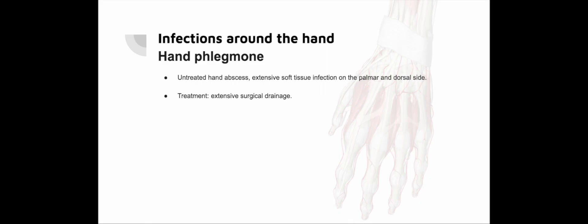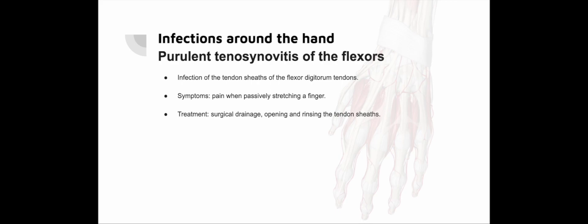Hand phlegmon: A hand phlegmon is a severe soft tissue infection that develops from an untreated hand abscess. It involves extensive inflammation and swelling of the soft tissues on both the palmar and dorsal side of the hand. Treatment is primarily surgical and consists of extensive drainage to remove the accumulated pus and promote healing. Purulent tenosynovitis of the flexors: Flexor tendon sheath synovitis is an inflammation of the synovial sheaths surrounding the flexor tendons in the fingers. The sheaths of the index and little finger extend into the wrist, allowing infection to spread to this area. Infections tend to remain localized in the shorter tendon sheaths of the middle, ring and little fingers. To distinguish between flexor tendon sheath synovitis and localized abscess, it is important to check for pain when passively stretching a finger. In all cases of flexor tendon sheath synovitis, surgical drainage is required, involving opening and rinsing the inflamed tendon sheath to remove pus and promote healing.